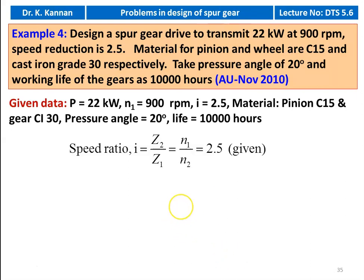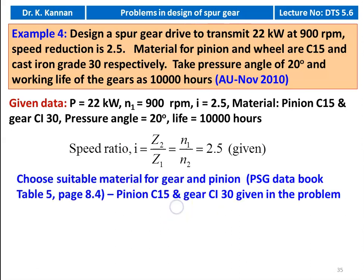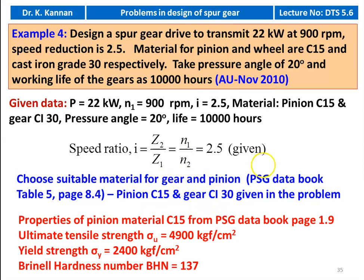Speed ratio is given as 2.5. Material is also given: pinion C15 and gear cast iron grade 30. We take the properties of the pinion material, since all the design is based on the pinion material properties. The smaller wheel is the pinion, so designing for the pinion will automatically satisfy gear requirements. Properties of C15 from page number 1.9: tensile strength σu = 4900 kgf/cm², yield strength = 2400 kgf/cm², Brinell hardness number BHN = 137.